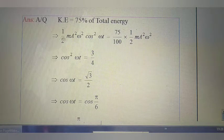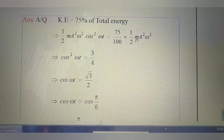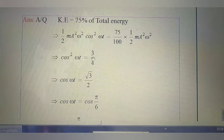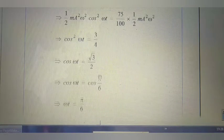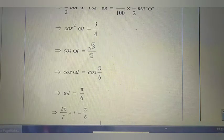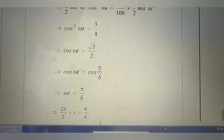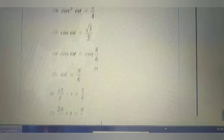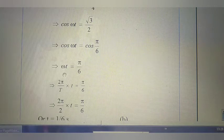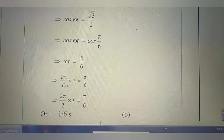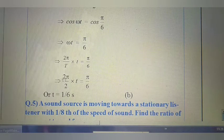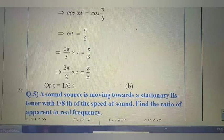Setting kinetic energy equal to 75% of total energy: ½mA²ω²cos²(ωt) = (75/100)·½mA²ω². Everything cancels, giving cos²(ωt) = 3/4, so cos(ωt) = √3/2. This corresponds to cos(π/6), so ωt = π/6. Since ω = 2π/T = 2π/2 = π, we get πt = π/6, so t = 1/6 second. The right option is B.